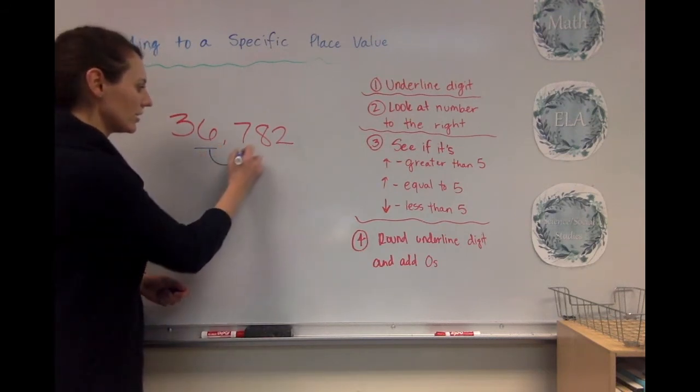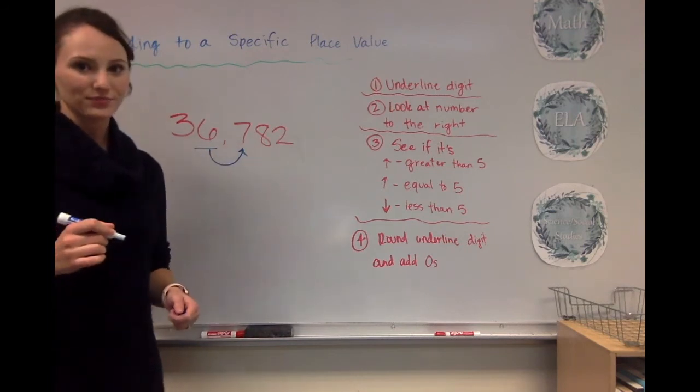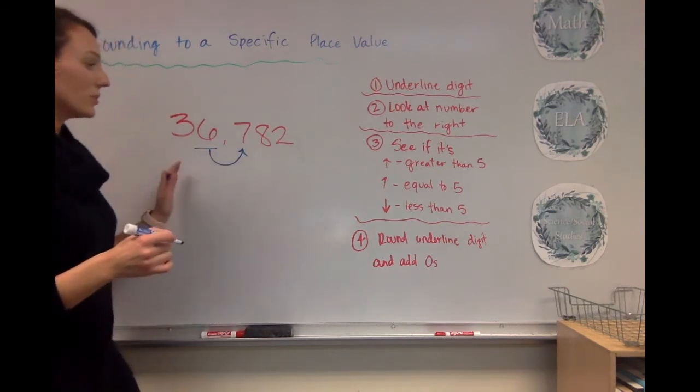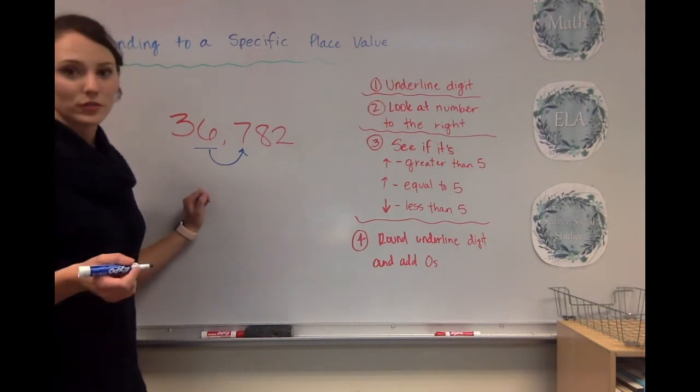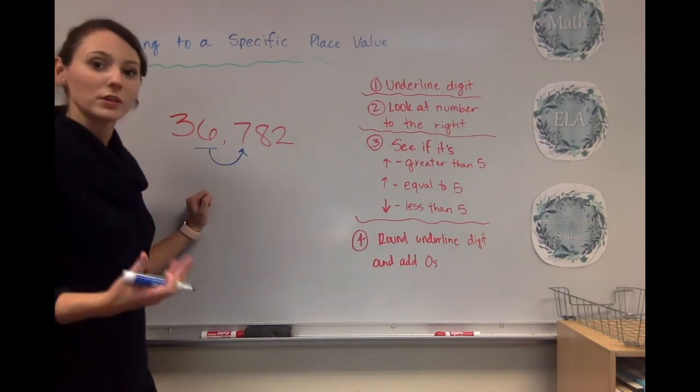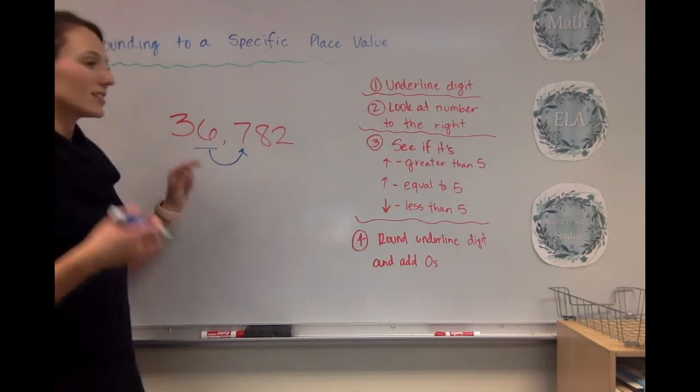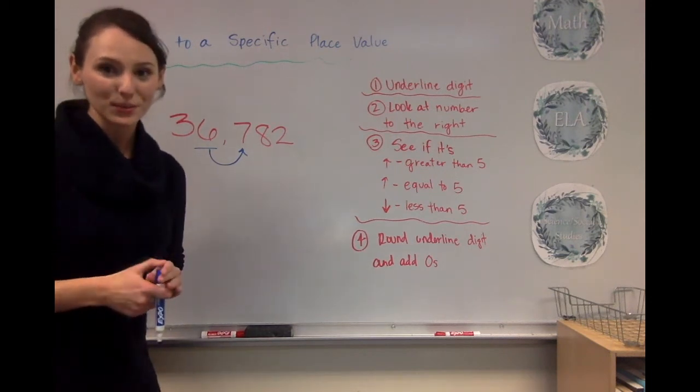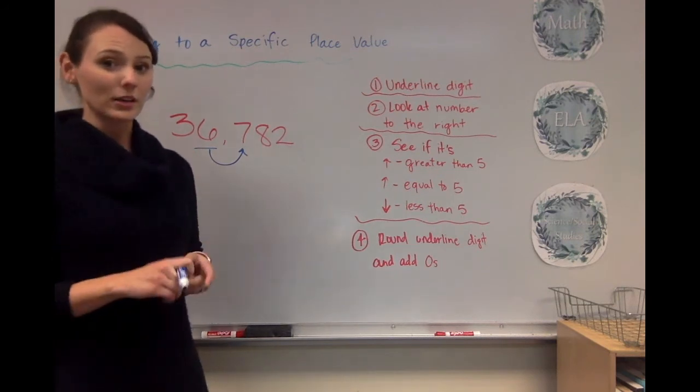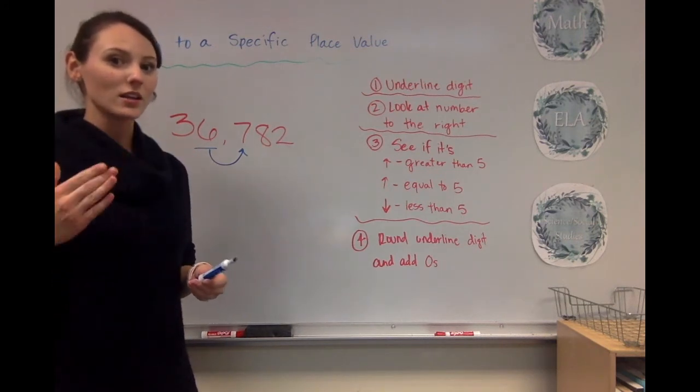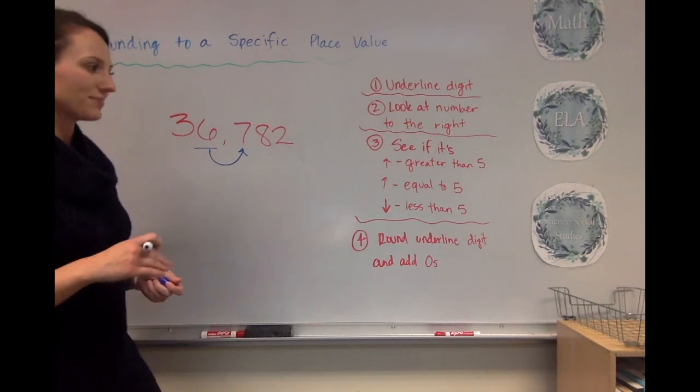And then I'm going to look at the digit to the right. Okay, so notice with this, when we're rounding to a specific place value, that's why it's so helpful to underline the digit that we're working with. Because if I asked you to round to the greatest place value, you would have underlined this. But that's why it's important that we pay close attention to what place it's asking us to round to.